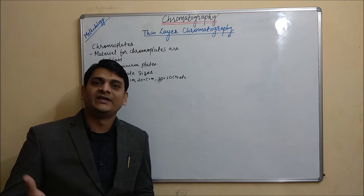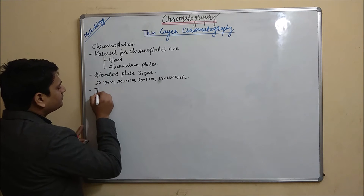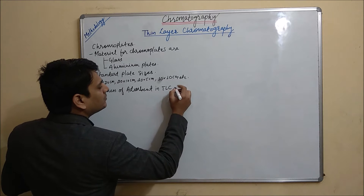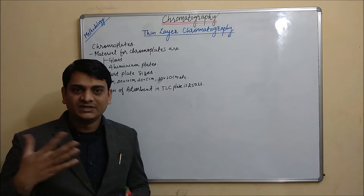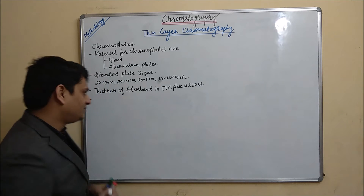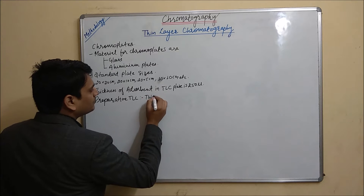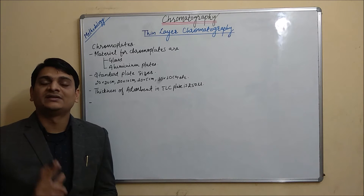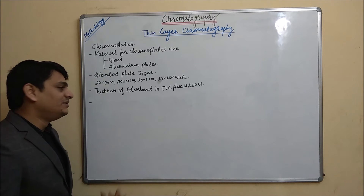Thickness of the TLC plate or adsorbent or stationary phase will be 250μm. When we are using preparative TLC, the thickness of the stationary phase will be 500 to 2000μm, which is the same as 0.5 to 2mm.